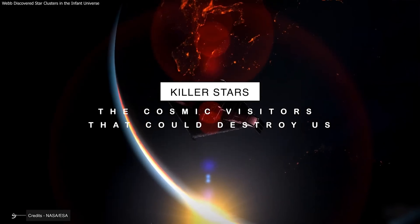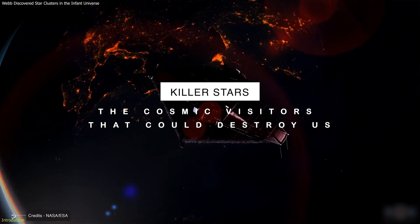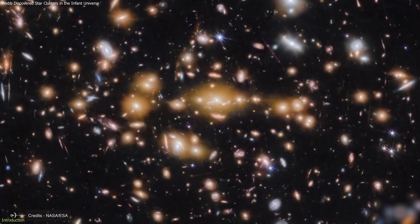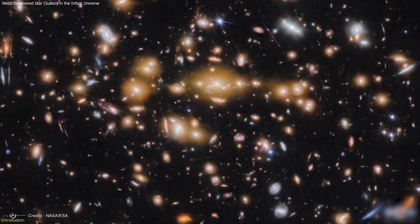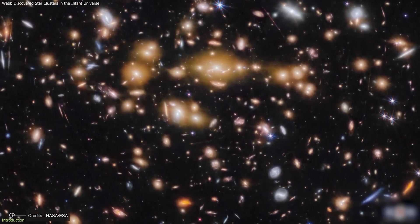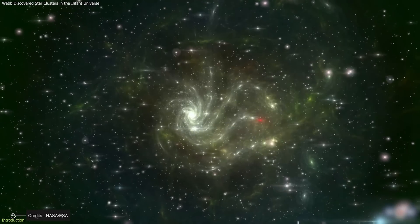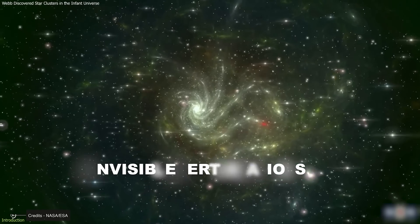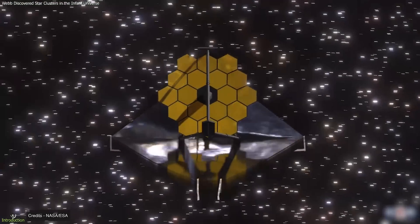Killer stars. The cosmic visitors that could destroy us. There's something profoundly unsettling about the idea that other stars can approach or even pass through our solar system, leaving behind gravitational chaos that can last millions of years, invisible perturbations that ripple through space like waves in a cosmic pond.